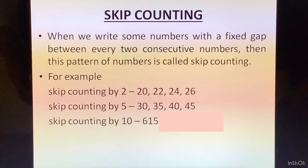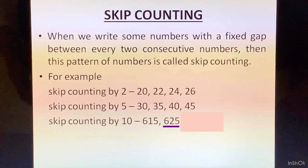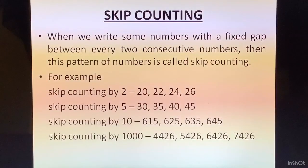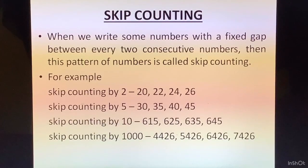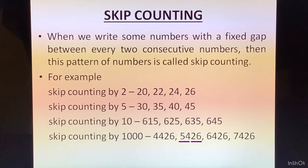Skip counting by 10: we add 10 to each number. Starting from 615, we get 625, then 635, then 645. Skip counting by 1000s: the difference between each number is 1000. Starting from 4426, we add 1000 to get 5426, then 6426, then 7426.